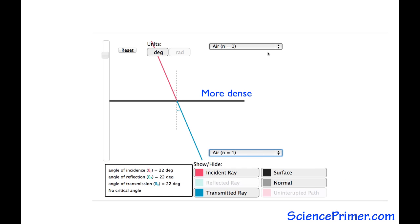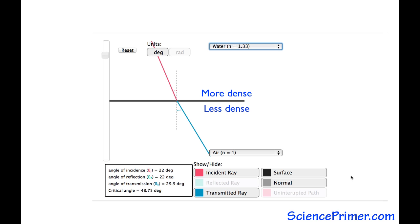Light traveling from a higher density to a lower density medium refracts away from the normal, making the angle of transmission greater than the angle of incidence. The greater the difference in density between the two media, the greater the refraction.